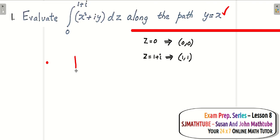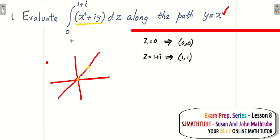On the x-y axes we have the line y=x. Starting from the origin O to the point (1,1), there are infinitely many points in between. We use all those points in the function and add them all up. For example, when you input (0,0) you get 0+0i, and when you input (1,1) you get 1+i. That is what we mean by a complex integral.